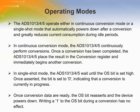The ADS1013, 1014, and 1015 operate either in continuous conversion mode or single-shot mode. In continuous conversion mode, the devices continuously perform conversions, and once a conversion has been completed, the result is placed in the conversion register. In single-shot mode, the ADS1013, 1014, and 1015 wait until the OS bit is set to high.